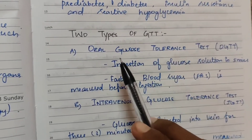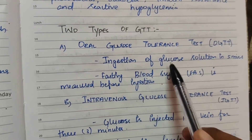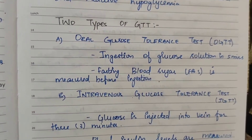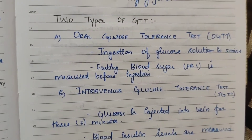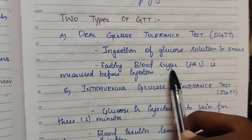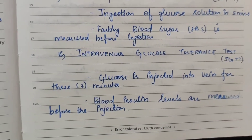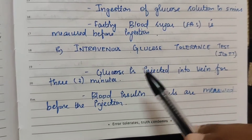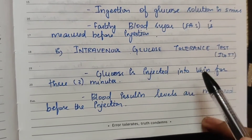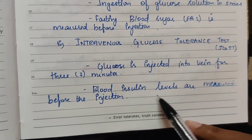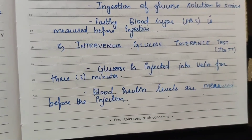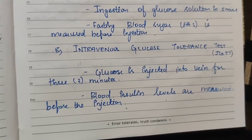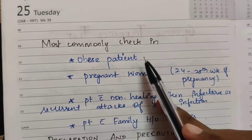There are two types of GTT test: Oral and Intravenous. In the oral type, a glucose solution is ingested within 5 minutes. For the Intravenous Glucose Tolerance Test, glucose is injected into a vein over 3 minutes, and blood insulin levels and blood glucose levels are measured before and after the injection.